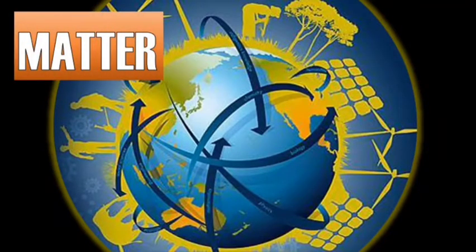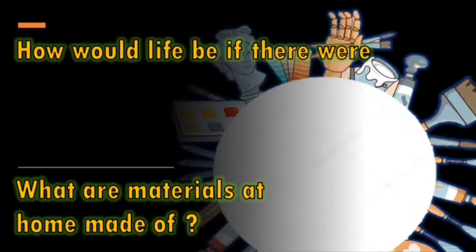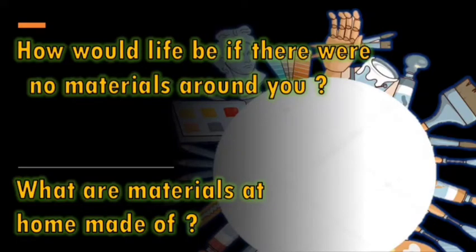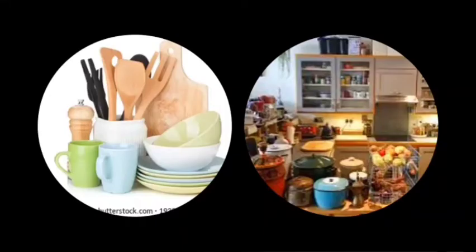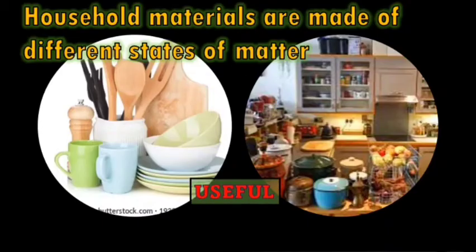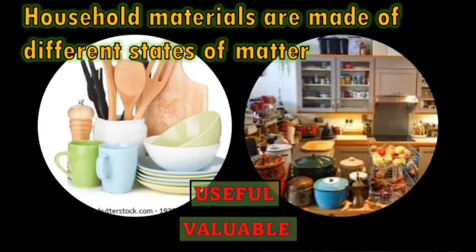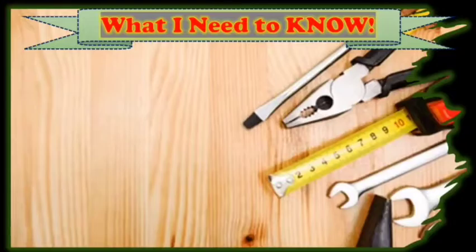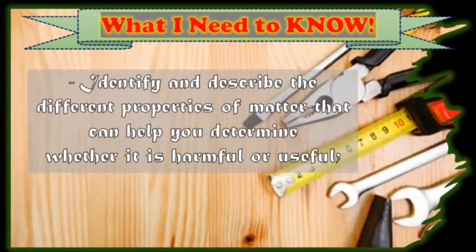Welcome to the world of matter. You are a part of this world since you are made of matter. How would life be if there were no materials around you? What are materials at home made of? Household materials are made of different states of matter. They have different properties that make them useful and valuable products to our life. So in this lesson, you will identify and describe the different properties of matter that can help you determine whether it is harmful or useful.